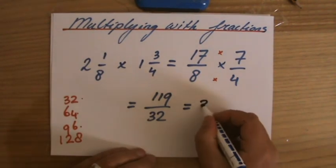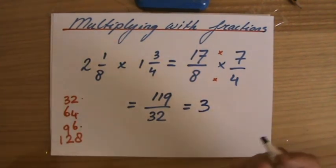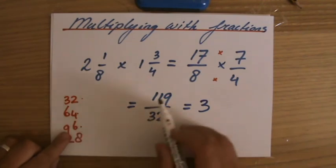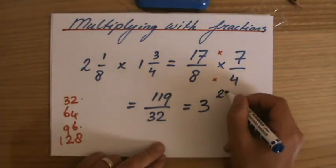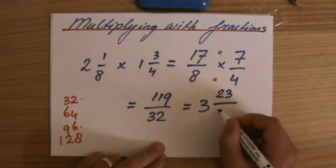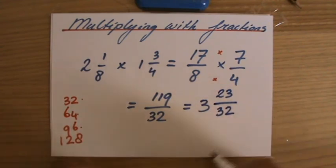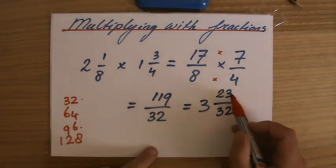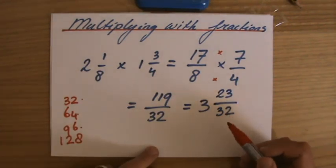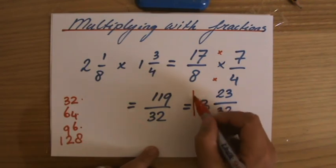Yeah, so I can take 3 whole ones out. And then what is my remainder? Well, 96 from 119, so 23 over 32. And 23 over 32, that cannot be further simplified because 23 is prime. And I cannot divide 32 by 23. So that is my final answer.